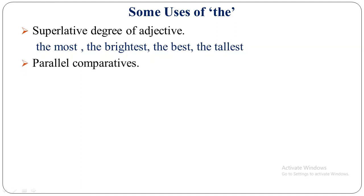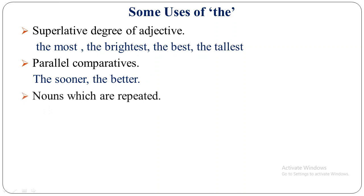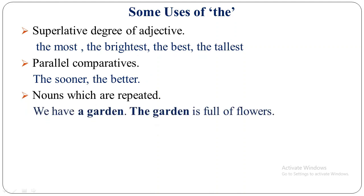Parallel comparatives: we must use THE before parallel comparatives. For example, 'the sooner, the better' — here sooner and better are both parallel comparatives, so we use THE before sooner and also before better. Nouns which are repeated: we must use THE before nouns which are repeated. For example, 'We have a garden. The garden is full of flowers.' Here 'the garden' is repeated, so we must use THE before the second mention of garden.